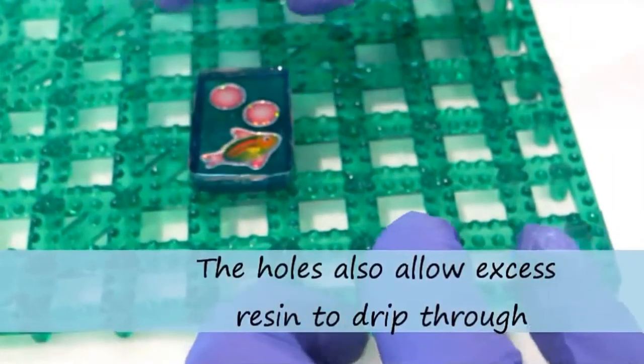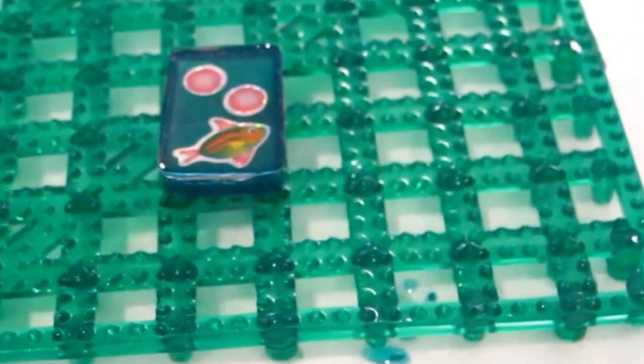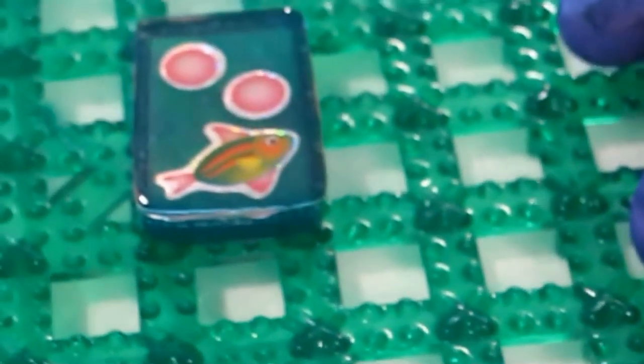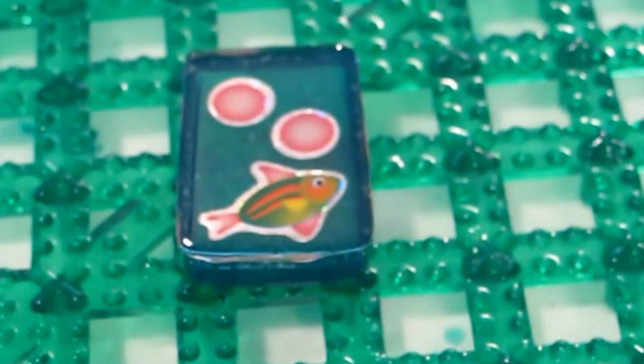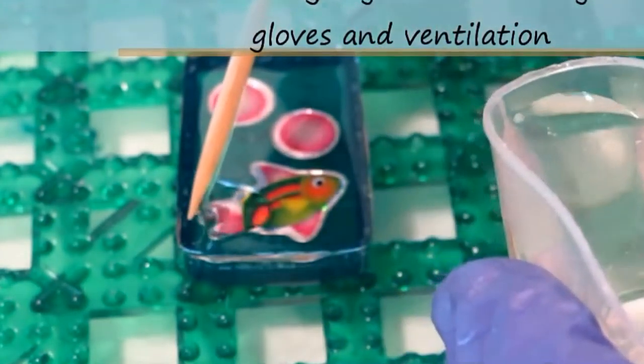So I'm going to do this on our Resin Obsession drying mat. This mat is really nice because it's got these little nubs to kind of help keep your casting in place, and what we're going to do is just put a little bit of clear resin on top,